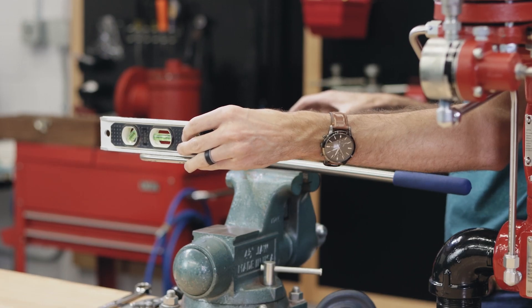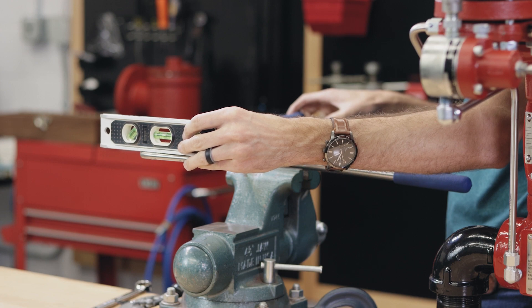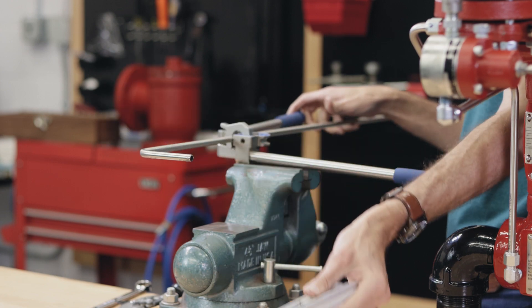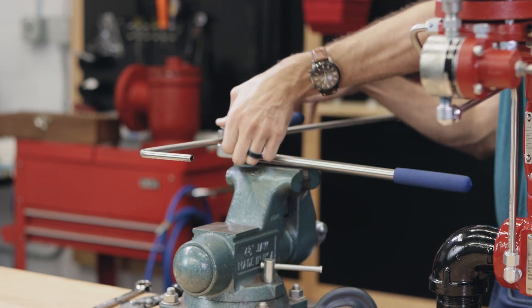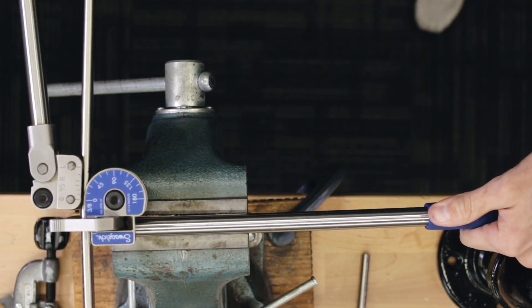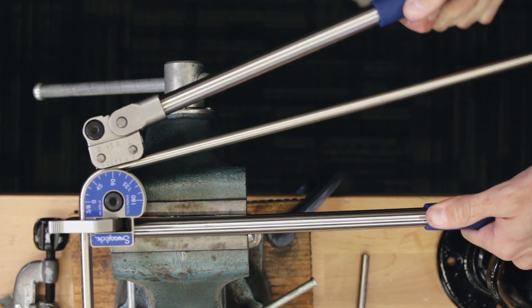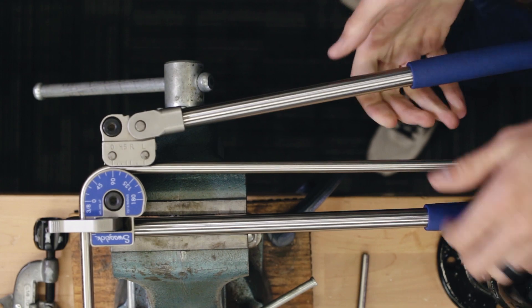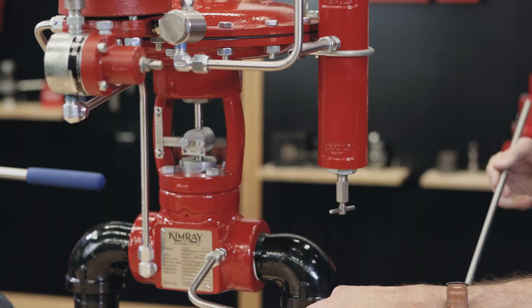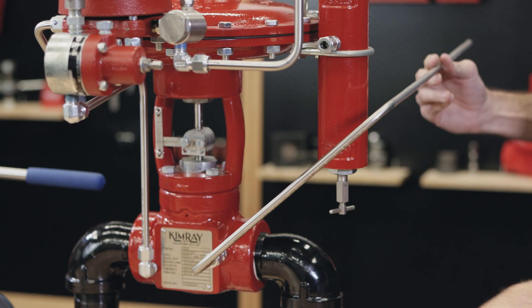This bend will need to be level with your previous one. Check the level of the tool, then the level of the previous bend before making your second 90. Mark the tubing where it meets the shoulder of the fitting to make your final cut.